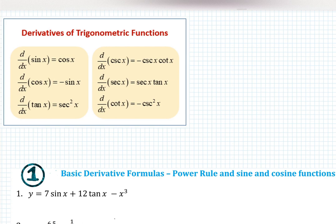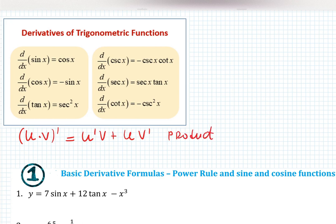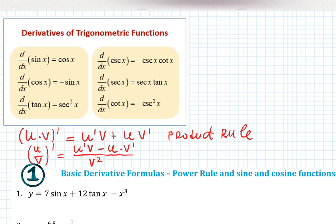Let's review product rule and quotient rule. The notation I give in my classes: u times v — that's product rule — will be u prime v plus u v prime. For quotient rule, u over v prime: always start with squaring the denominator, or else you'll forget it later. Then derivative of the top numerator, copy denominator, minus copy derivative. Remember that the order here matters because of the negative sign.